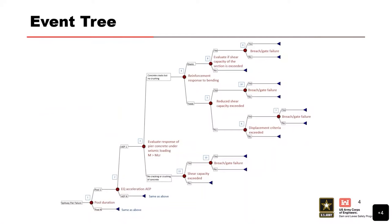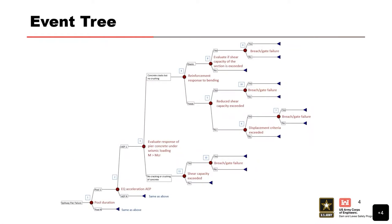Getting into the event tree again — this is for a reinforced concrete structure. This is showing one branch for one pool duration and one seismic load range. The event tree is going to have multiple ranges for seismic events and potentially multiple ranges for pool duration. There are a lot of different paths to failure, and oftentimes you want to think about this ahead of time, well before a risk analysis, to see how it's going to play out and if there are ways to simplify it.